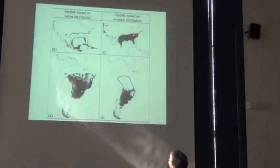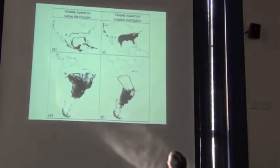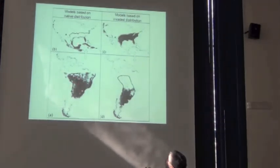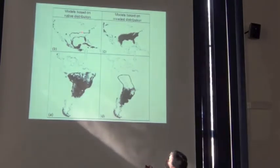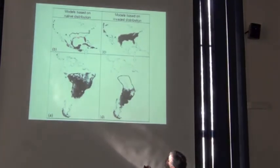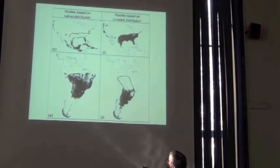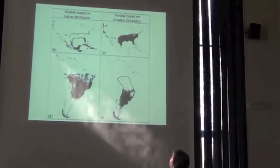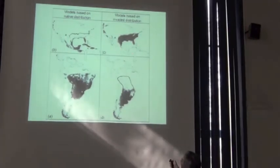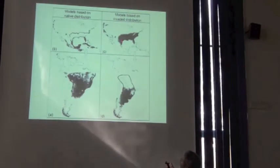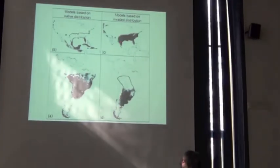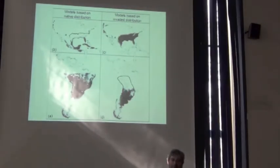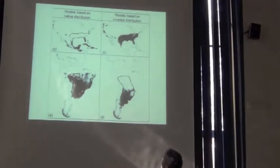Here's the original. And essentially, you see the native range in South America, there are points there predicting the invaded distribution in North America and only getting this Gulf Coast rim and not getting up to the true limit of the fire ants' reach. And on the other hand, you can take the invaded range, build a model, and project it onto the native range. And you see it misses to the side.